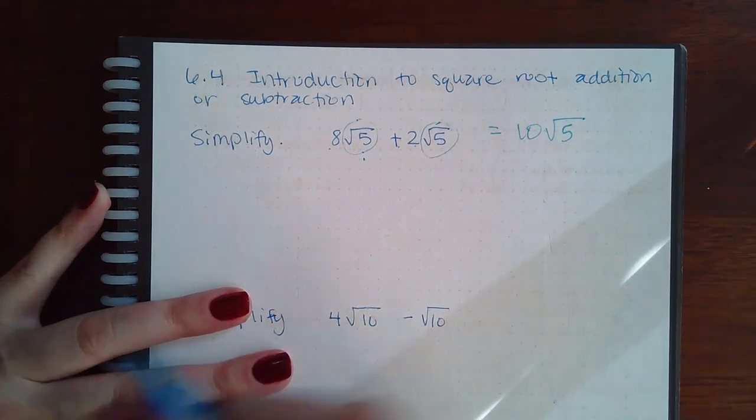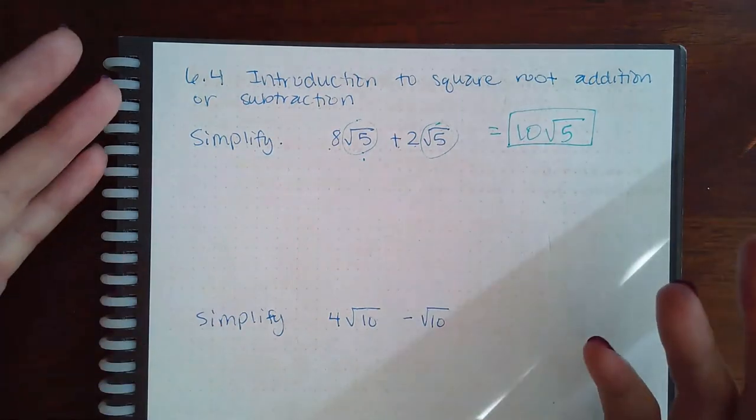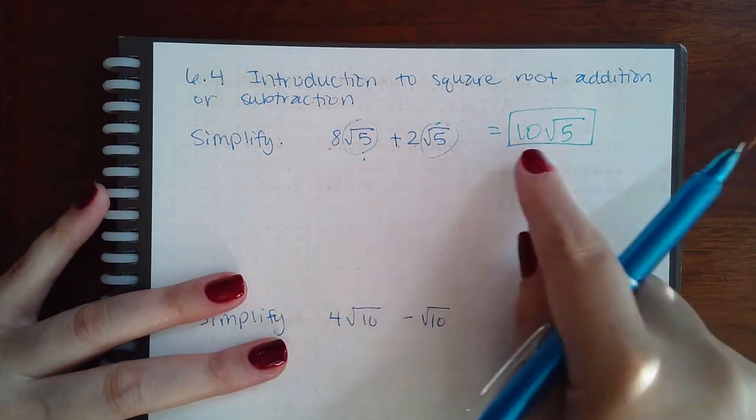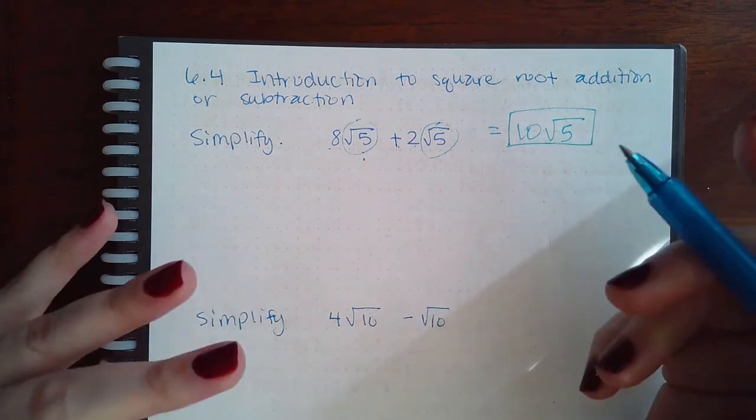They're kind of like variables, right? If you have eight of those variables and then two more of those variables, you end up having ten of those variables.